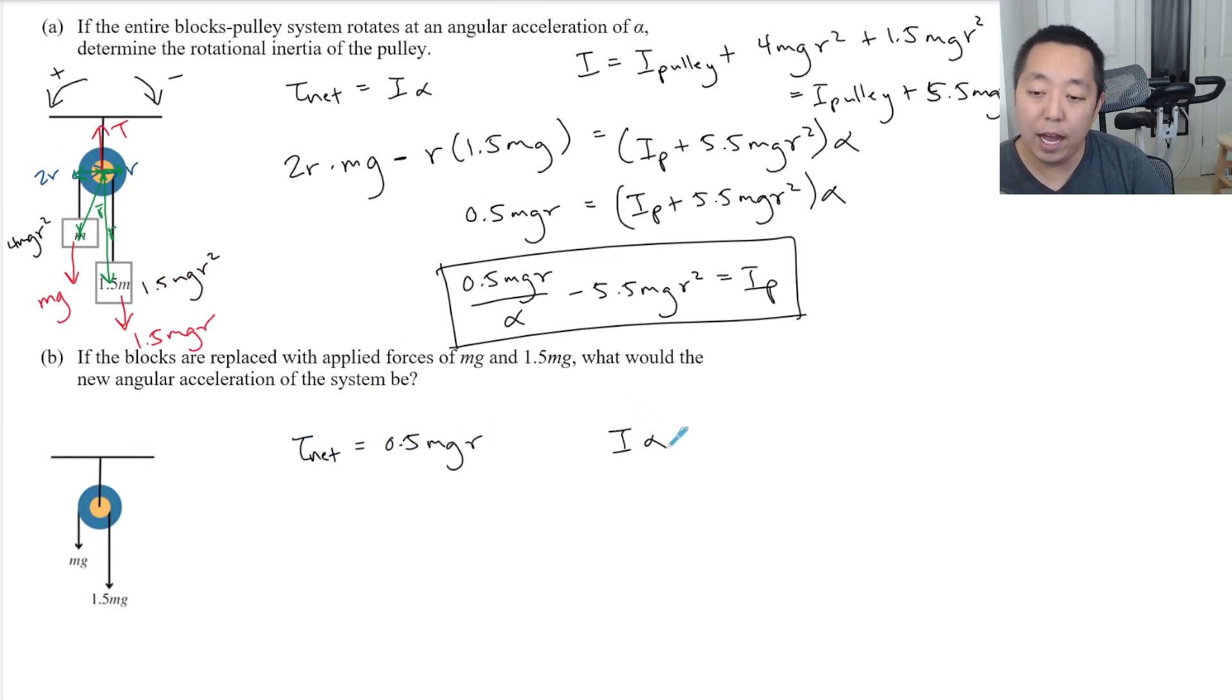What about the I alpha part? Well, I is just now the pulley because I've removed the blocks. So there's no I of the blocks anymore. So this is just I pulley times alpha.